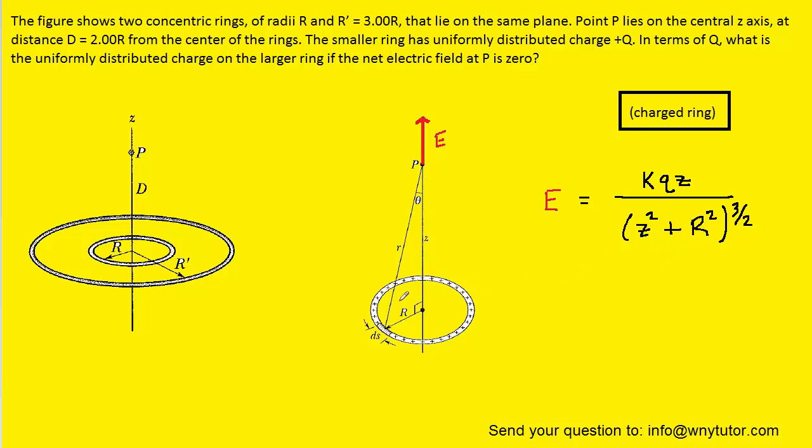Z is the distance from point P down to the center of the ring. And R is the actual radius of the ring. Now hopefully we can see in the diagram that this picture corresponds nicely to the picture over here, except that we have two charged rings.